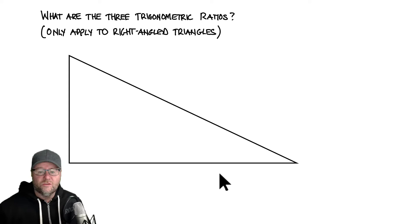and they only apply to right angled triangles. So really important, don't try and apply these trig ratios to triangles that aren't right angles. So let's fix this one. It's not a right angle at the moment because there's no symbol. Now it is a right angled triangle.